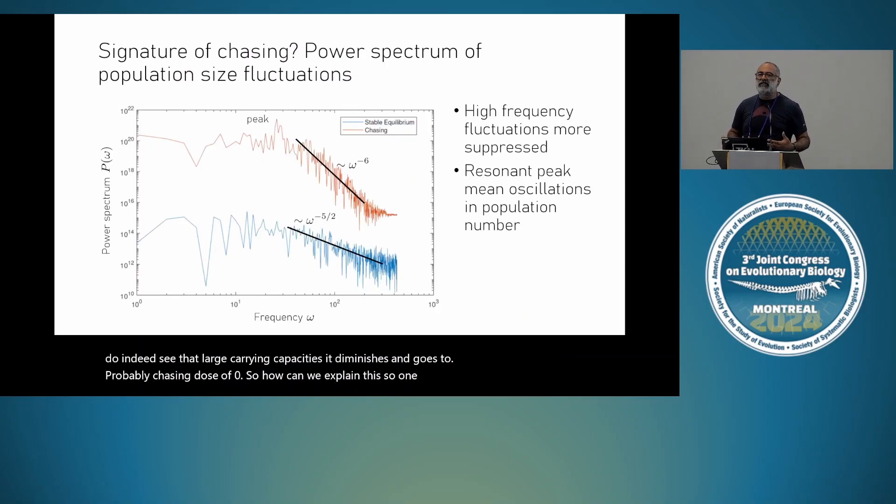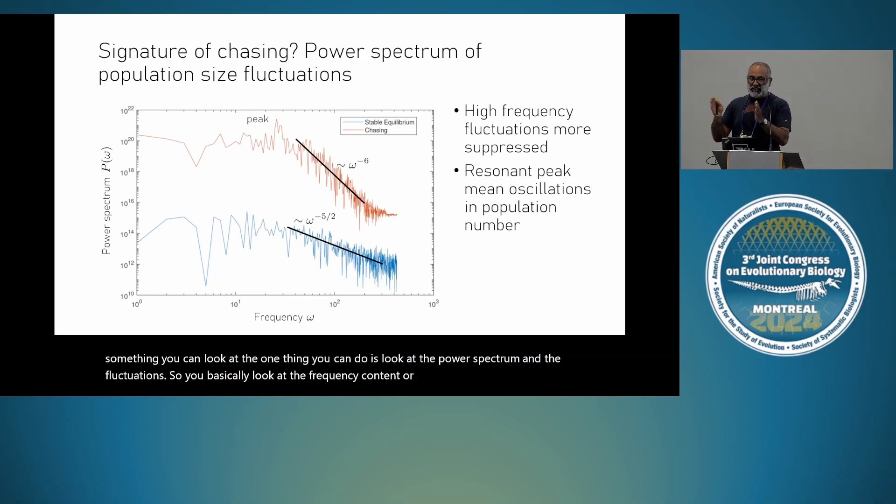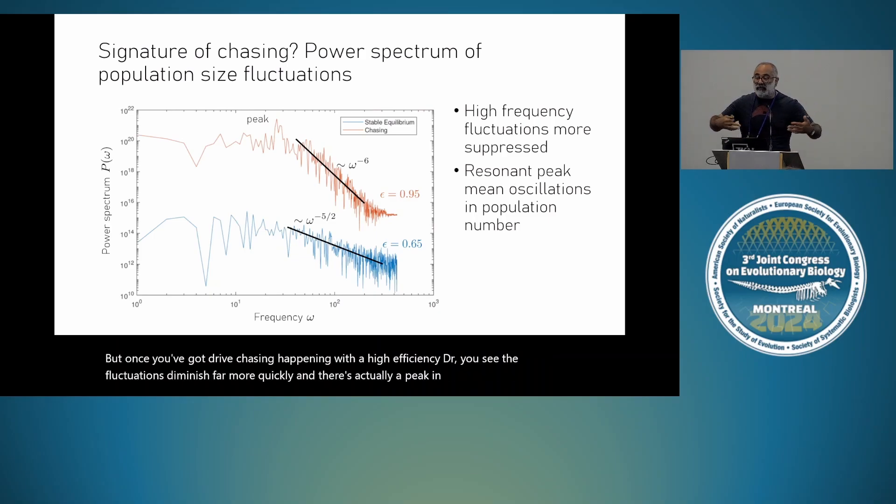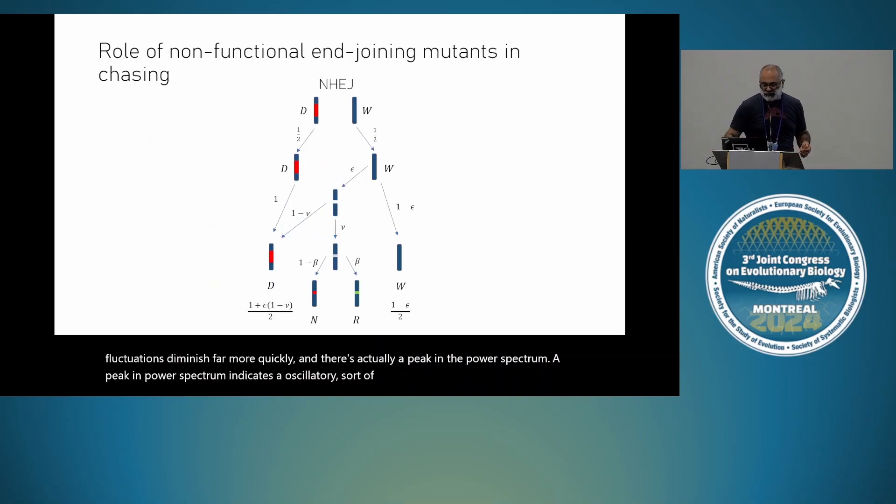So how can we explain this? One thing you can do is look at the power spectrum and the fluctuations. You basically look at the frequency content of the fluctuations at different scales of frequency. And you get these two different types of signatures. If you've just got poor drive, you get an equilibrium between wild-type and drive. And you just get these normal fluctuations. And you see that it has a particular power law. But once you've got drive chasing happening with a high-efficiency drive, you see the fluctuations diminish far more quickly. And there's actually a peak in the power spectrum. A peak in power spectrum indicates an oscillatory sort of behavior.